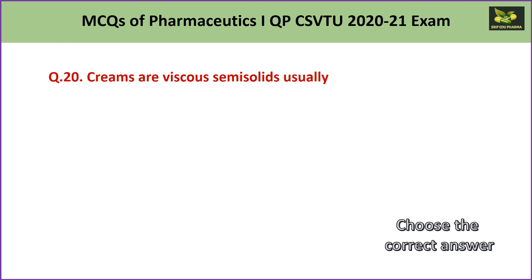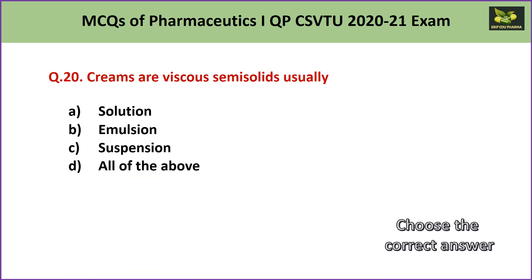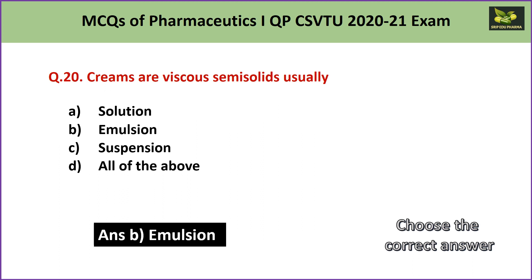Question number 20: Creams are viscous semi-solids, usually A. solution, B. emulsion, C. suspension, or D. all of the above. Creams — such as cold cream and vanishing cream — come under emulsion. Hence the answer is B — emulsion.